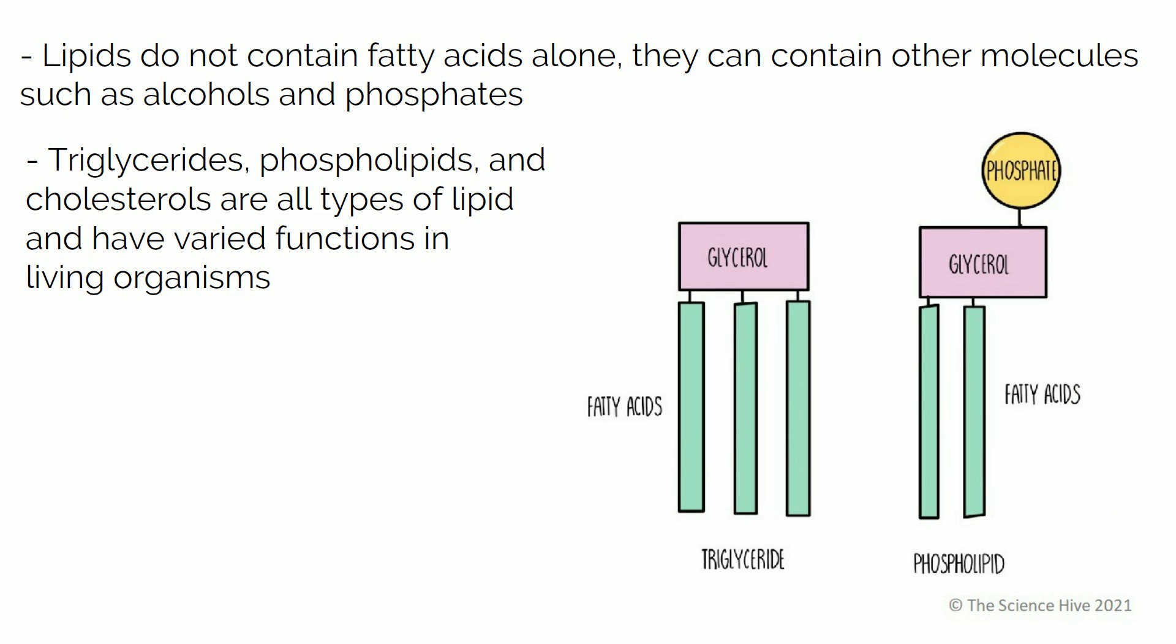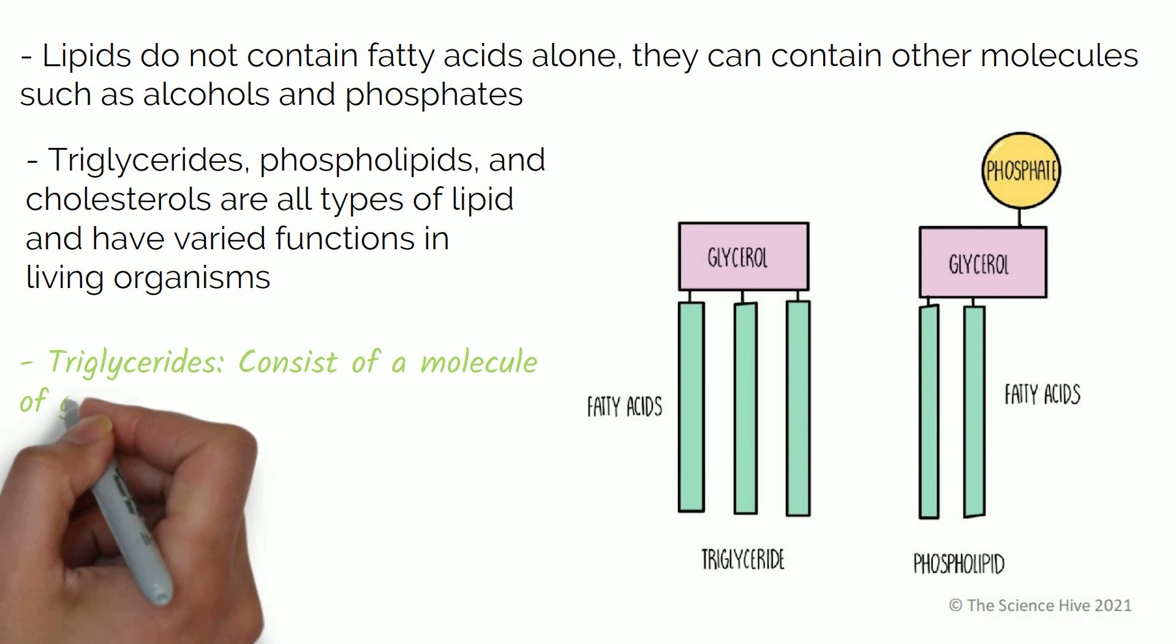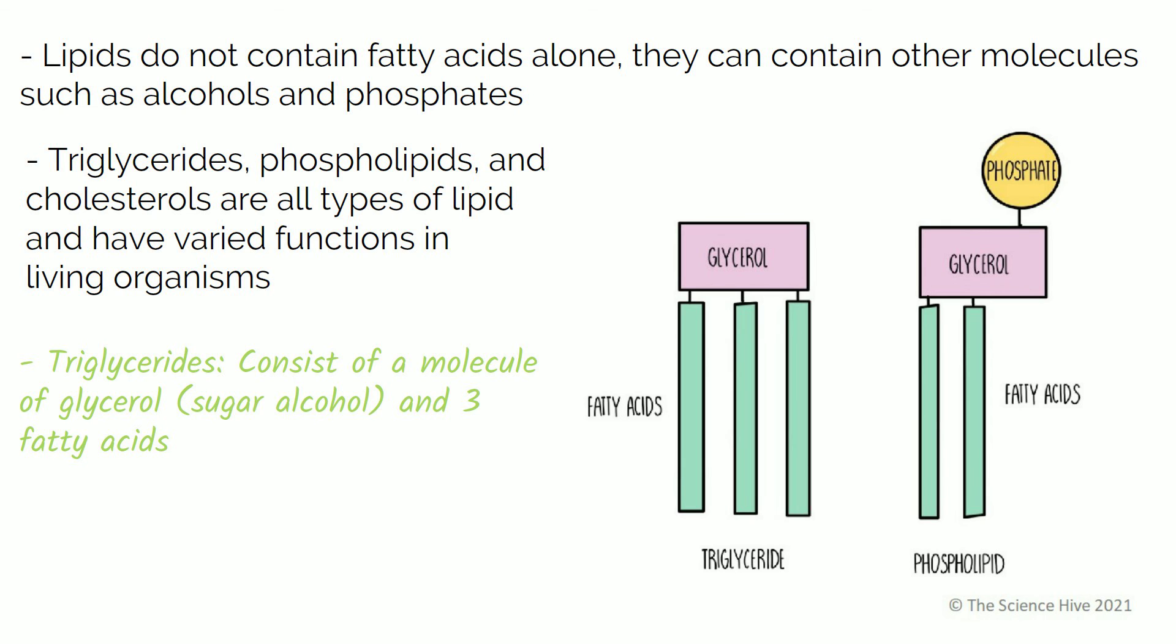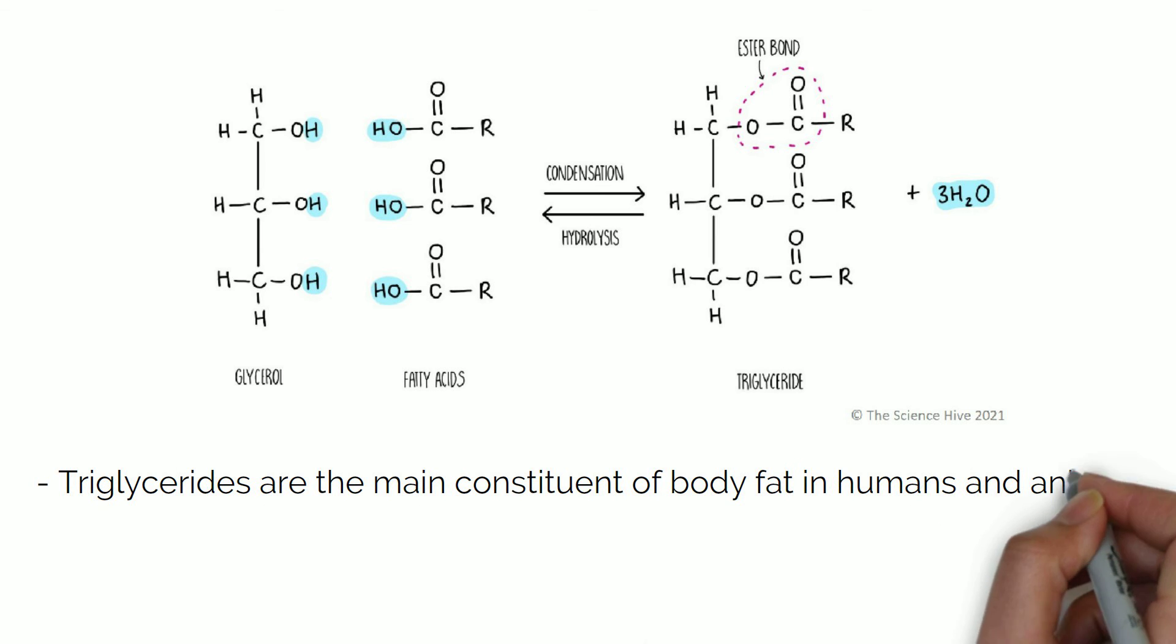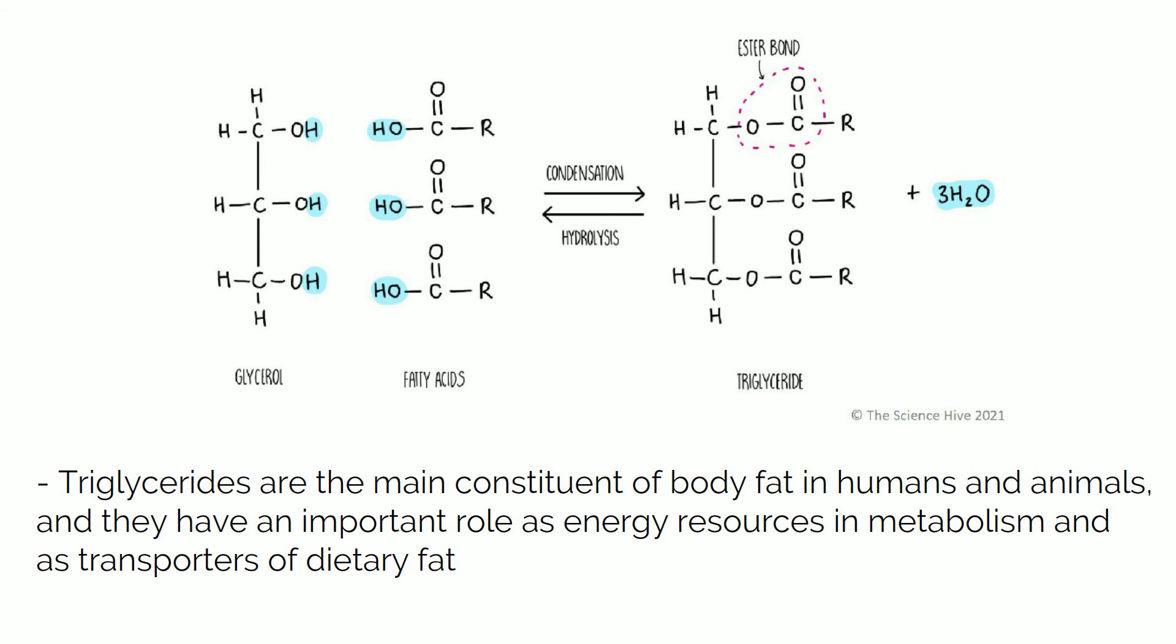Triglycerides consist of a molecule of glycerol, sugar alcohol and free fatty acids. Triglycerides are the main constituent of body fat in humans and animals. They have an important role as energy resources in metabolism and transporters of dietary fat. The long hydrocarbon chains of the fatty acids contain lots of chemical energy. Triglycerides are well suited for energy storage because they contain twice as much energy as carbohydrates. They are also insoluble in water so they can remain in the cell without affecting the water potential and can be stored for long term.